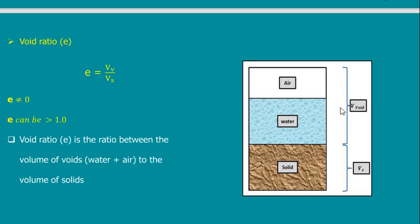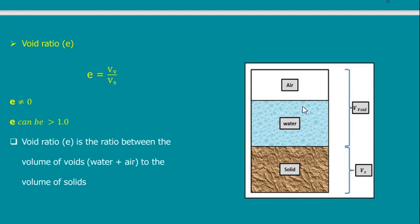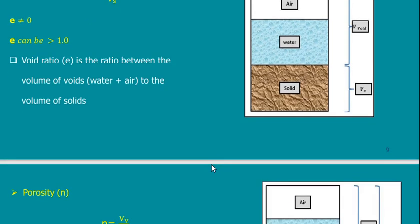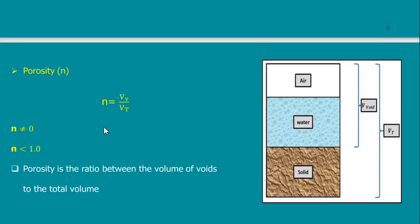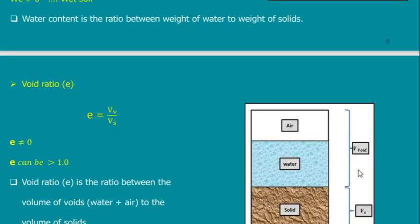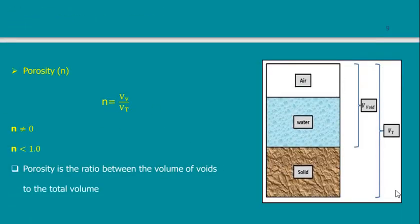Now we are studying how to transfer data to be used in future design. This is the void ratio. There is also something called porosity. The difference between void ratio and porosity: for void ratio E, it is V-void over V-solid — two different parts. For porosity n, it is V-void divided by V-total. So porosity is always less than 1.